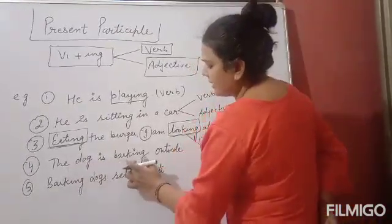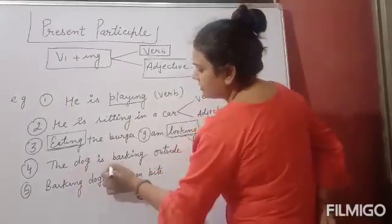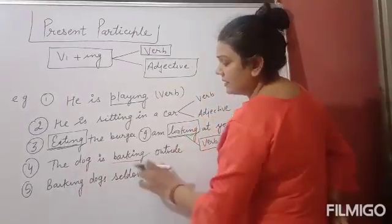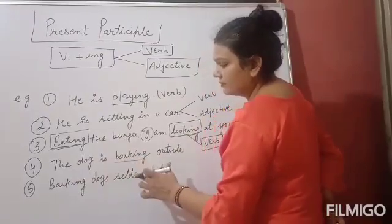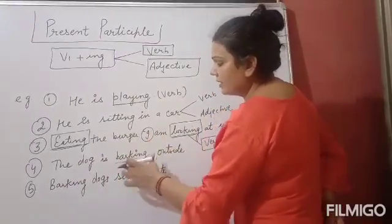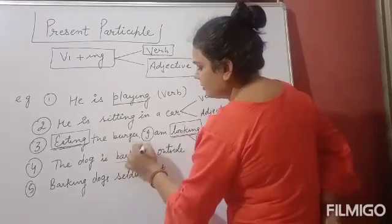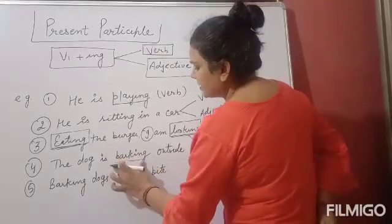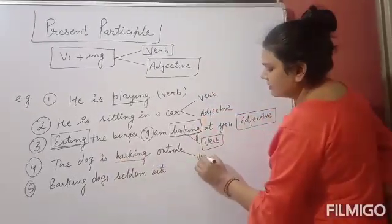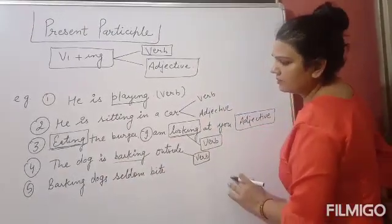'The dog is barking outside.' The work of barking is ongoing, which means the present participle 'barking' is used here as a verb.